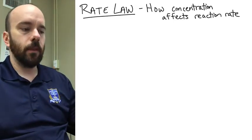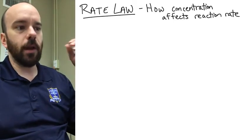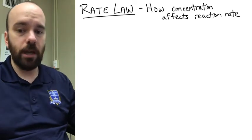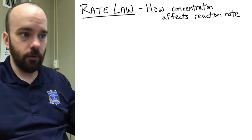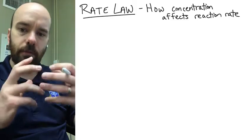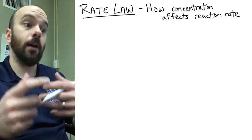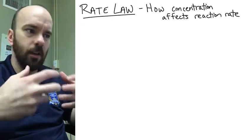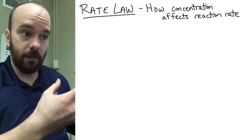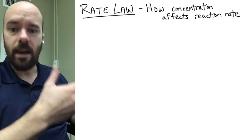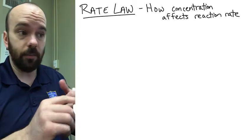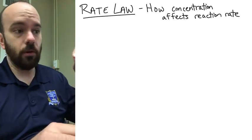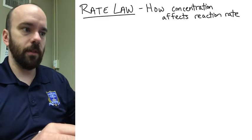In this video we're going to look at rate law and explore how concentration affects reaction rate. There are three different rate orders: zeroth order, first order, and second order, with three different mathematical relationships for how concentration affects the rate — in other words, how much of a reactant you have affects how quickly the reaction is taking place. We'll go through each reaction order and look at the math as well as some of the theory behind it.